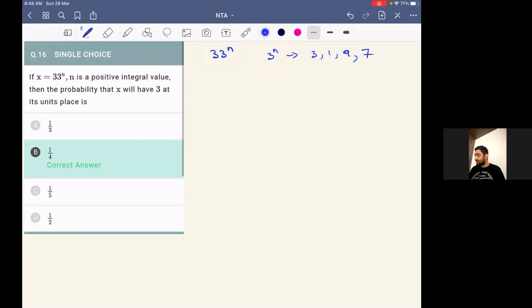And we can say that the unit place of 33 power n will be same as 3 power n. Because 33 is 30 plus 3 whole power n. If we look in terms of binomial expansion, we can clearly see 30 is not going to contribute to the unit digit because it has 0 in its unit place. So only 3 power n will contribute to the unit place.